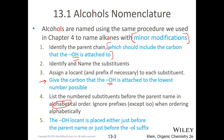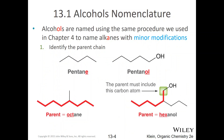Let's look at a couple of examples. You know how to name pentane — you find the longest continuous carbon chain. There it is: one, two, three, four, five carbons.